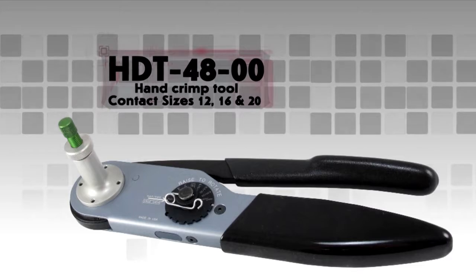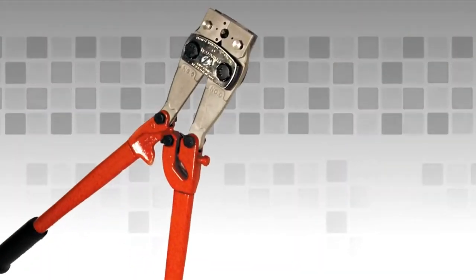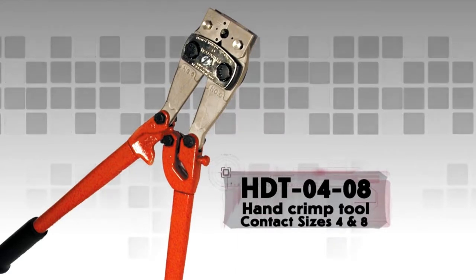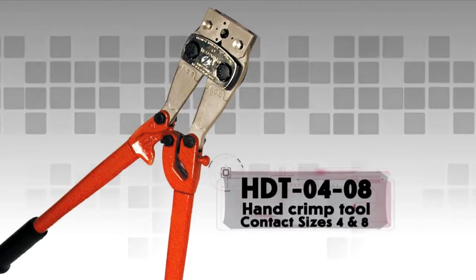To crimp sizes 4 and 8 solid contacts, the HDT-04-08 hand crimp tool is required. See your Deutsch catalog for more information.